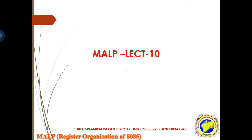Dear students, welcome back. Today in our microprocessor assembly language program, lecture number 10. In the previous 9 lectures, we have discussed about the evolution of microprocessors and the 8085, properties of the 8085, specific configurations of 8085, the bus structure, and related topics. In the last two lectures, we discussed about the pin diagram of 8085. Today we start before the architectures of 8085, and our lecture is on the topic of register organization of 8085.